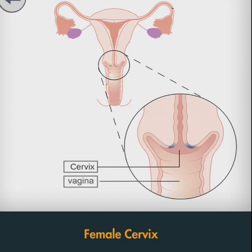This sterile environment is maintained by preventing bacterial invasion through the frequent shedding of the endometrium, thick cervical mucus of the endocervix, and a narrow external OS. Thanks for watching.